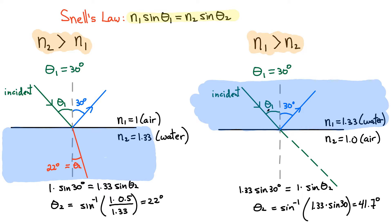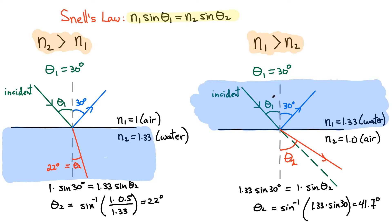So we came in at 30 degrees, but the refracted light ends up being at a bigger angle — 41.7 degrees. So when you go from a high index to a low index, you get a bigger angle than the incident angle. That's an interesting case. There are also a couple of other important things that happen when light goes from one medium to another — what happens to the speed, the wavelength, and the frequency?